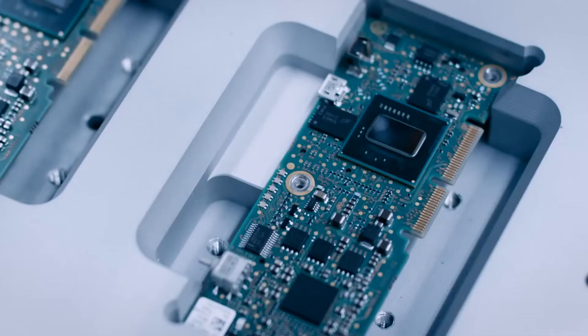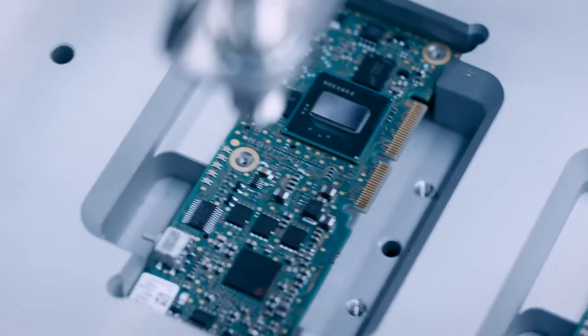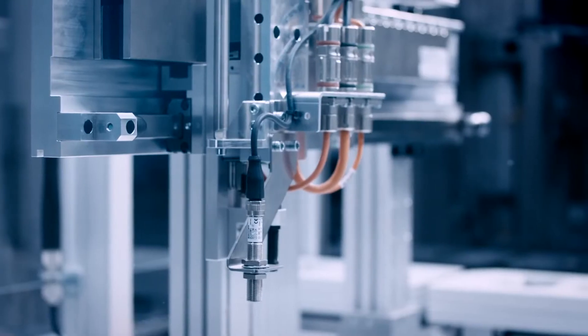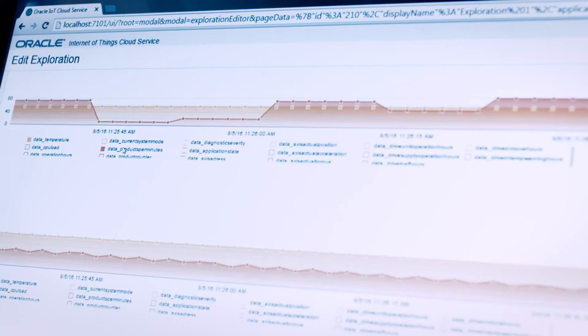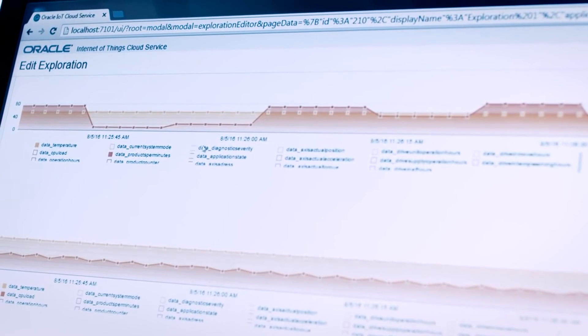The application of heat-conducting paste is simulated in the first station. A motion logic system from Rexroth controls the Cartesian robot. At the same time, it records relevant process parameters and forwards them to a local or cloud-based analysis system.